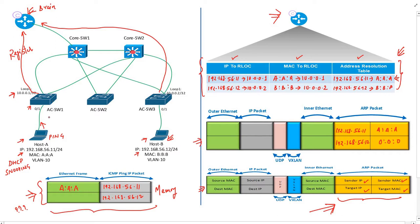The ARP message has four fields: sender IP 192.168.56.11, sender MAC A:A:A, target IP 192.168.56.12, and target MAC all zeros. To send this ARP message over the wire, host A completes the layer 2 frame with source address A:A:A and destination address the broadcast address, all F's.